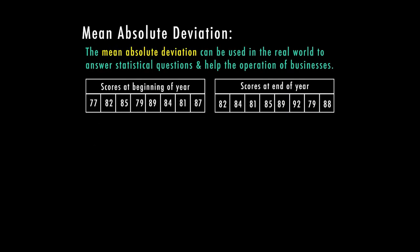Since this is kind of a difficult concept we're going to go over another example and show how the mean absolute deviation can be used in the real world to answer statistical questions and help with the operation of businesses. Today we're going to look at the scores from the beginning of the year and scores from the end of the year. So we can see a little bit of how this data can be used.